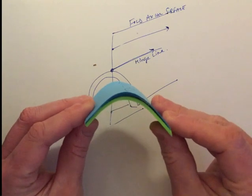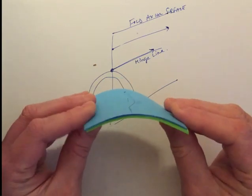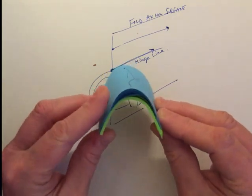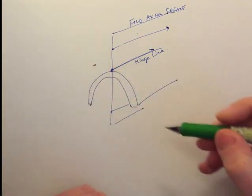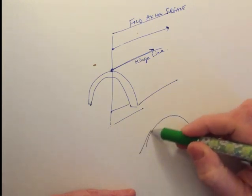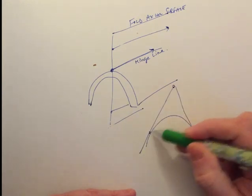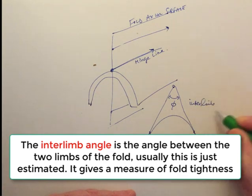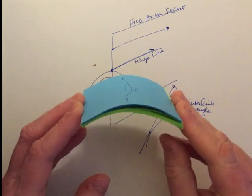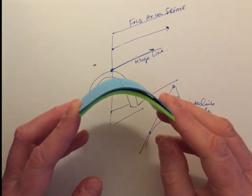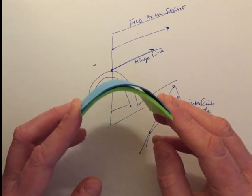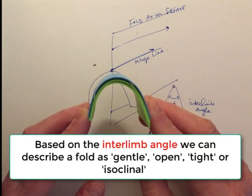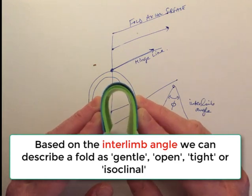There's another feature of the fold defined now, and that's the interlimb angle. We said before that with our fold we have a hinge region and two limb regions. The interlimb angle is a measurement of this angle between the limbs. Drawing that on our sketch, we project up from each of the limb regions and we estimate this angle. We can see with our model that this could be a very gentle angle—the angle between the limbs is going to be quite high, like 140 or 120 degrees with a very gentle fold.